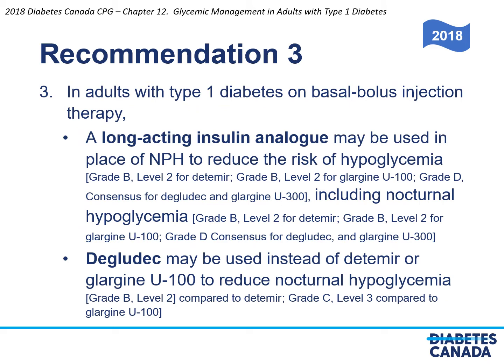Recommendation 3: In adults with type 1 diabetes on basal bolus injection therapy, a long-acting insulin analog may be used in place of NPH to reduce the risk of hypoglycemia, including nocturnal hypoglycemia. Note that Degludec and Glargine U300 carry a Grade D consensus because these insulins were never studied compared to NPH. Degludec may be used instead of Detemir or Glargine U100 to reduce nocturnal hypoglycemia.